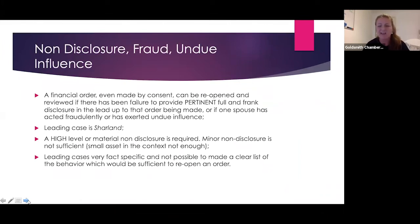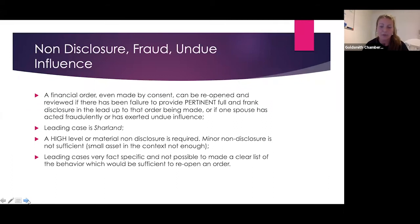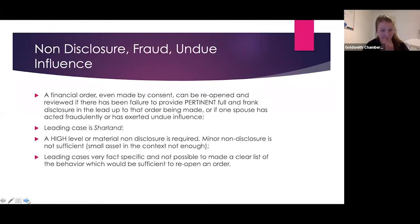Non-disclosure, fraud, or undue influence is the second way to make an application to vary — but it's very niche. Leading cases are highly fact-specific, and it's not possible to give a conclusive list of behaviors sufficient to reopen an order. You must be careful when applying on this basis. If the other party failed to disclose something minor — say a watch worth £700 — that's probably not going to be enough to reopen the whole case. It has to be material non-disclosure; full and frank disclosure must have been withheld. Minor non-disclosure will not suffice, though this is case-dependent based on the nature of the assets.